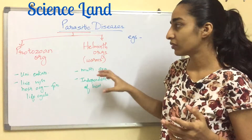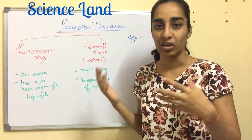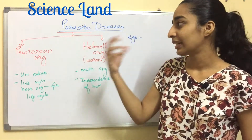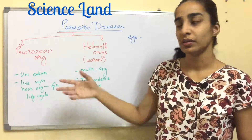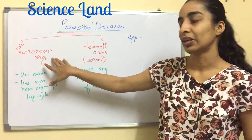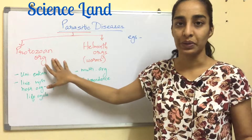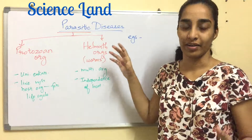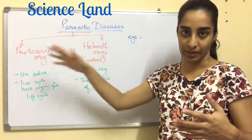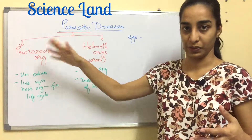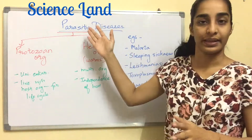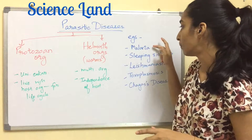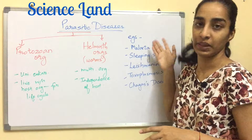Helminths, on the other hand, can reproduce and multiply outside the host cells, so there is no imperative requirement of a host. Also, the basic visual difference is that since protozoans are unicellular, they are microscopic, while helminths are large compared to protozoans.